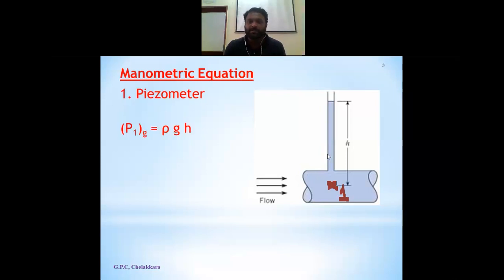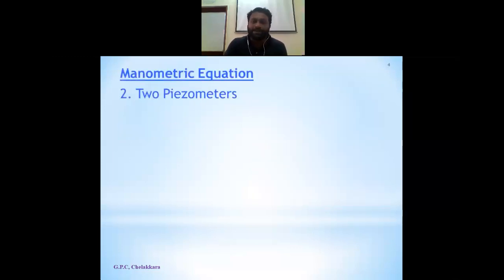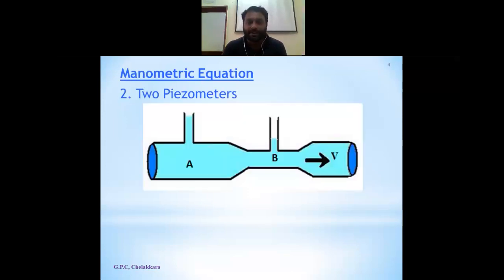Gauge pressure at section one is exactly rho*g*h — very simple, no other effort required. Here rho is the mass density of the flowing fluid in kg/m³, g is acceleration due to gravity (9.81 m/s²), and h is the static head measured with respect to the center line of the flow.